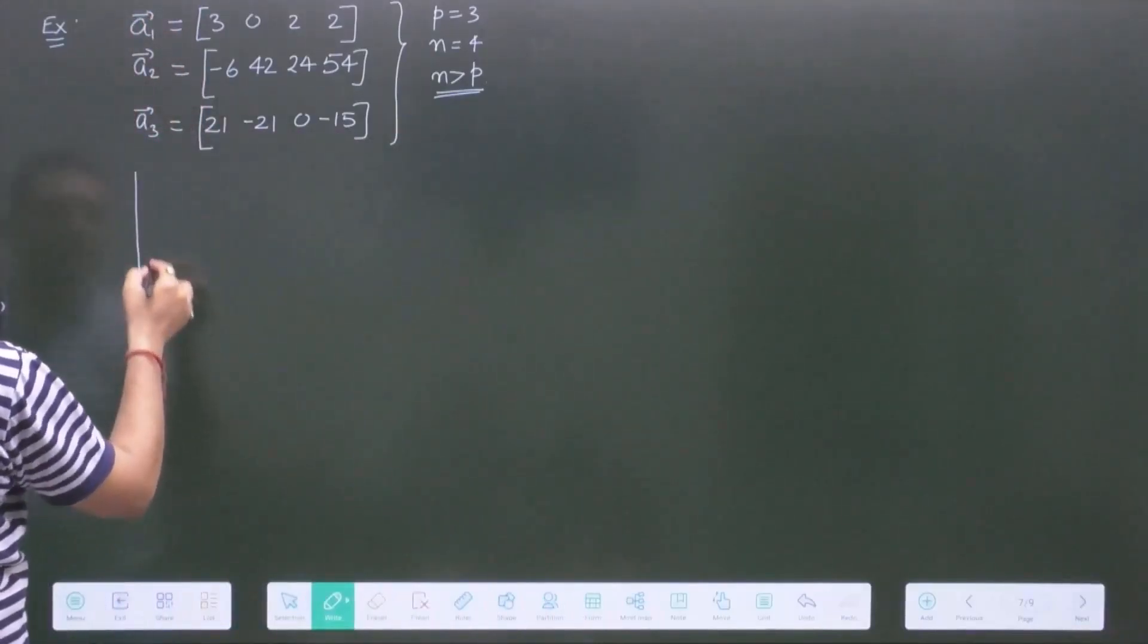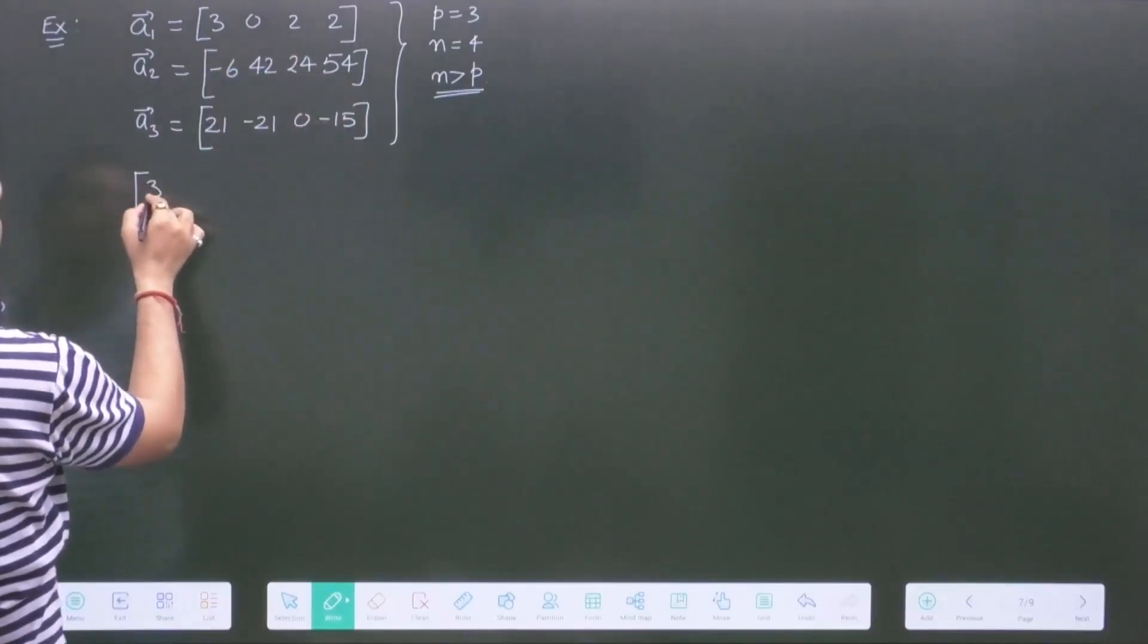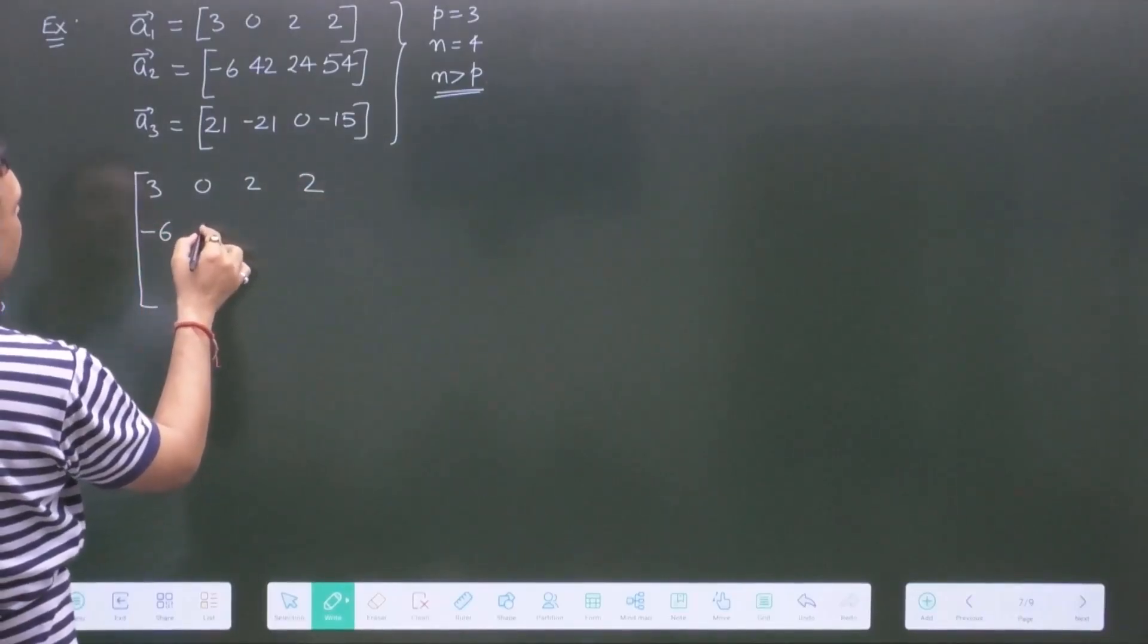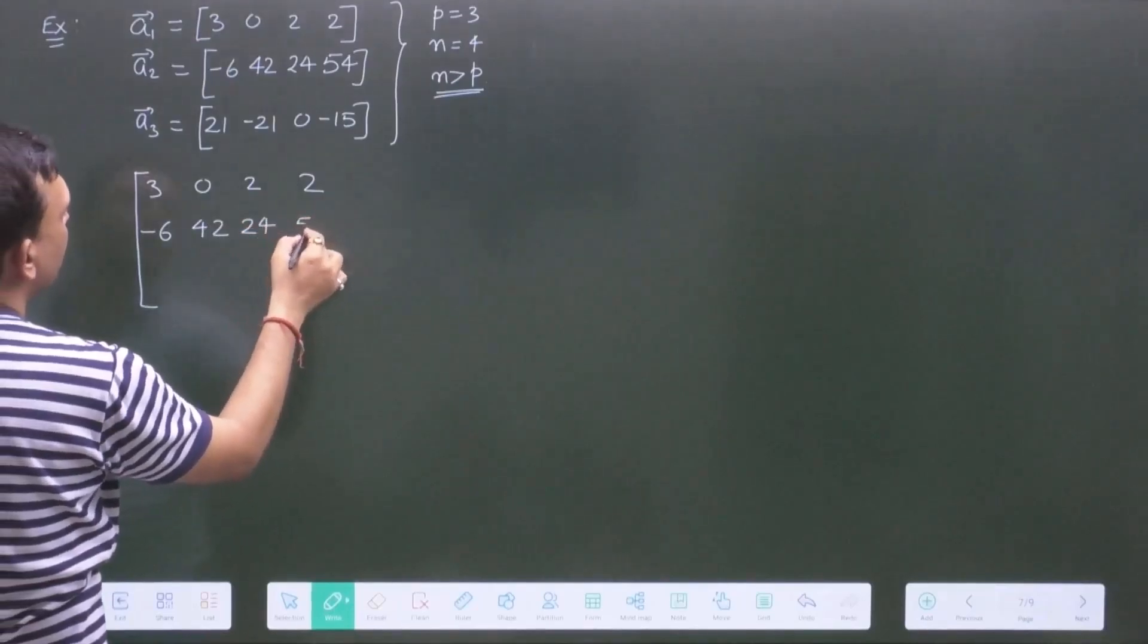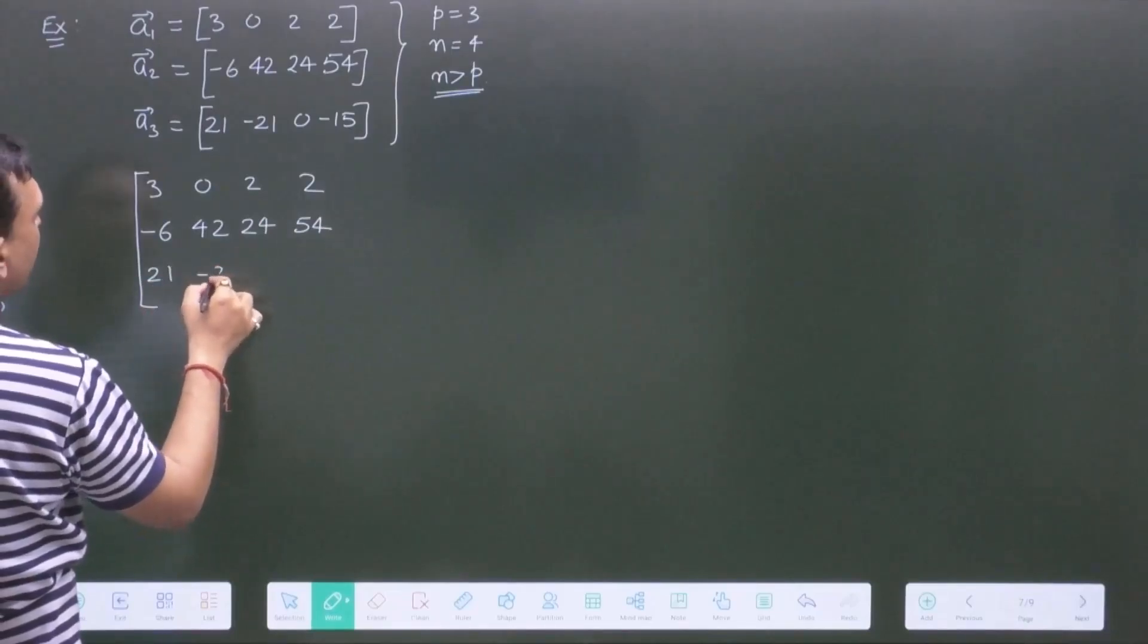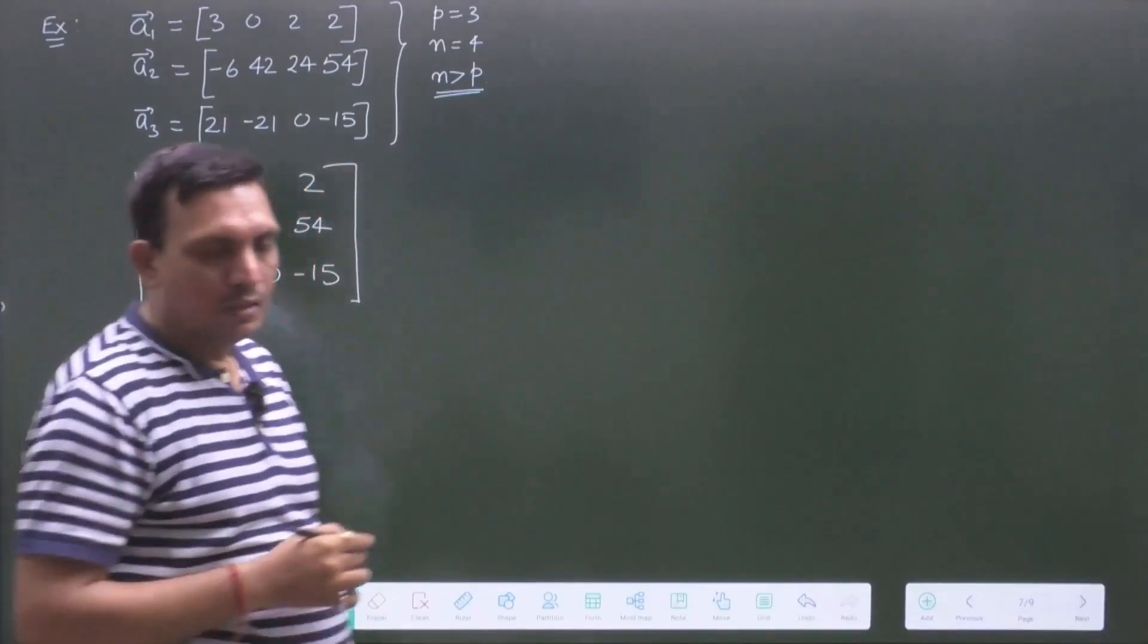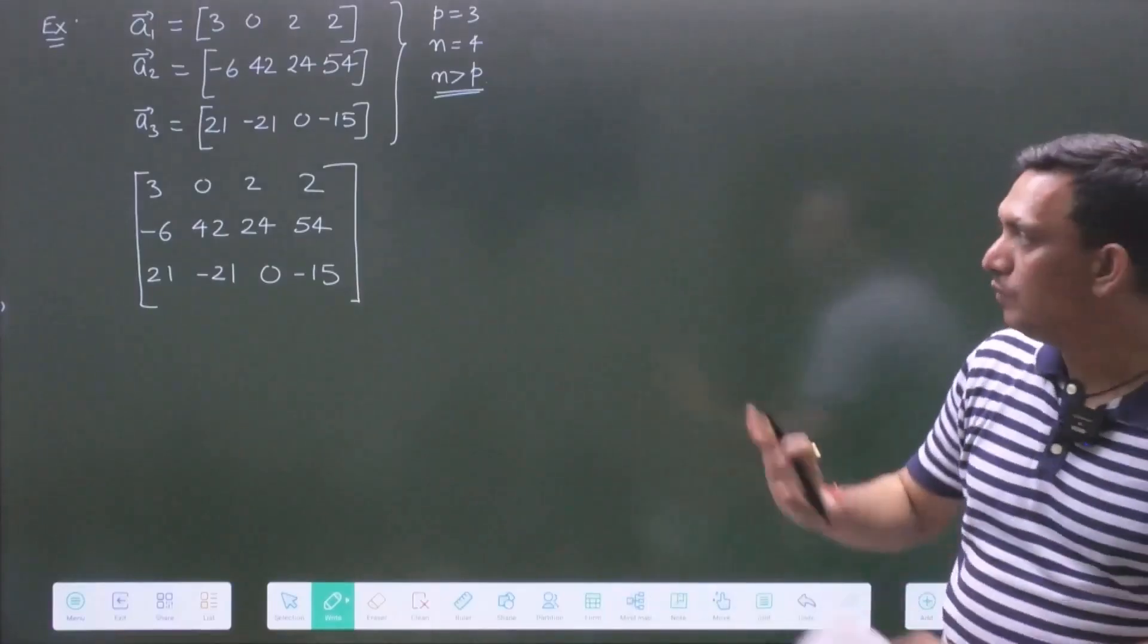Our matrix is, we have to place this as a row vector. So, this is 3, 0, 2, 2; minus 6, 42, 24, 54; and this is 21, minus 21, 0 and minus 15. This is our matrix. So, we have to place these vectors as row vectors. So, now you will get a matrix. Now, we have to find maximum number of linearly independent row vectors.